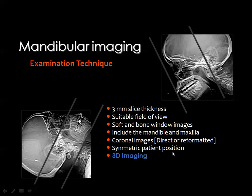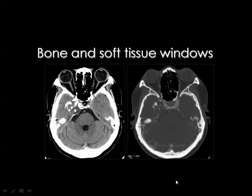Whenever we have multi-detector machines, we can obtain 3D images for the mandible, zygoma, and alveolar margin. We should have soft tissue and bone window images, displayed on films or CDs. This is the difference between soft tissue window, where you can see the details of the orbit and brain tissue, while in the bone window images you can better evaluate lesions containing calcium, and also see the bones of the orbit and calvarial bones.